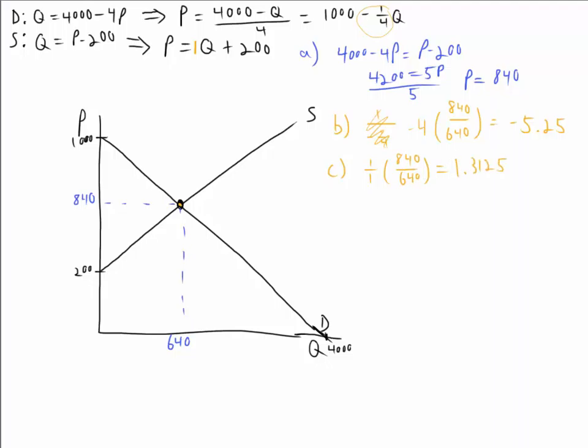Part D wants us to find what proportion of the tax will be paid by consumers. Well, in order to do that, we have a $10 tax. What we're going to have to do is write a demand equation with a tax. So demand with a tax is going to be that P equals 1,000. We have to take away the $10 tax, so that's 990 minus one-fourth Q.